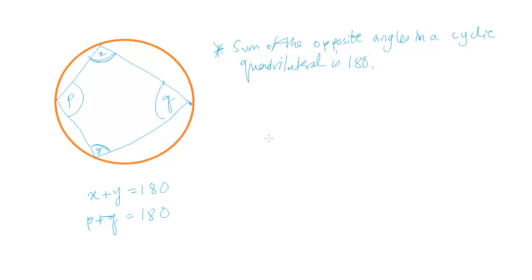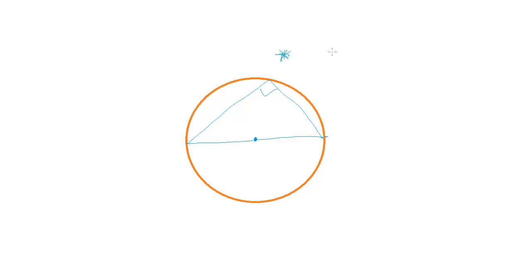There is another rule: if we have a diameter as the chord, the angle it subtends at the circumference is always 90 degrees. That is the final proposition regarding the angles of chords — the diameter makes 90 degrees at the circumference.